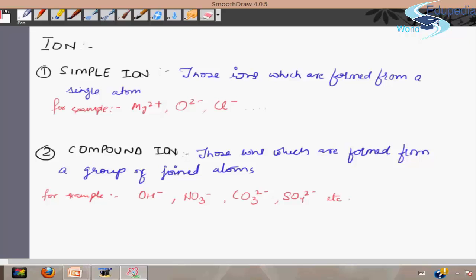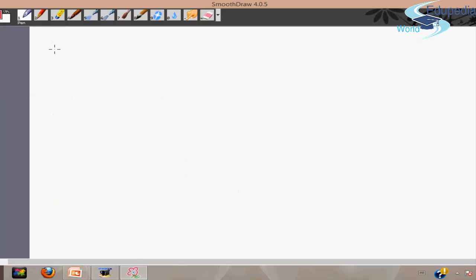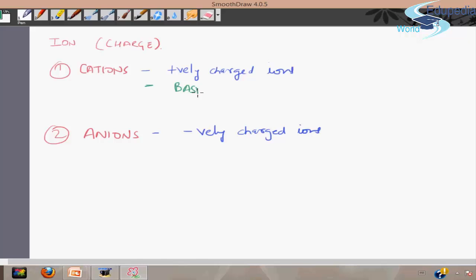Now if I classify ions in terms of the charge on it, we have two kinds of ions. We have cations and anions. Cations are the positively charged ions, whereas anions are the negatively charged ions. Cations are also called basic radicals, and anions are called acid radicals.